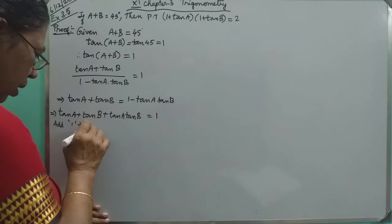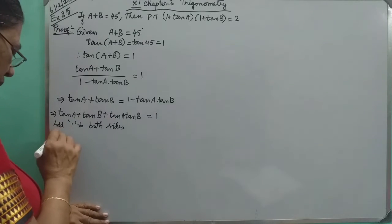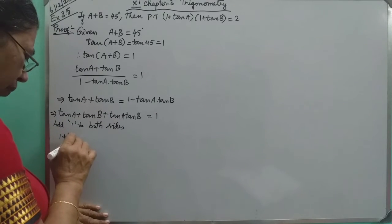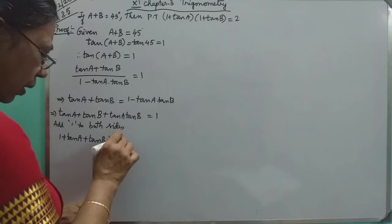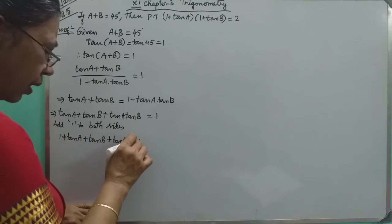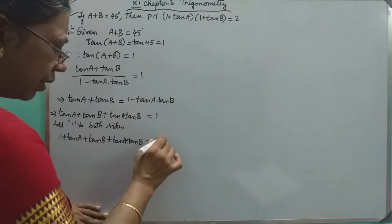Add 1 to both sides. So this will become 1 plus tan A plus tan B plus tan A tan B. Tan A tan B means in between we have into sign. That is equal to 1 plus 1.